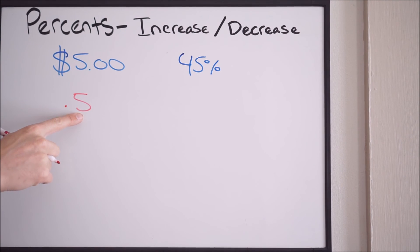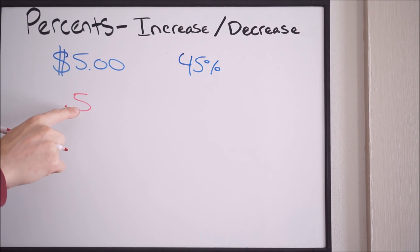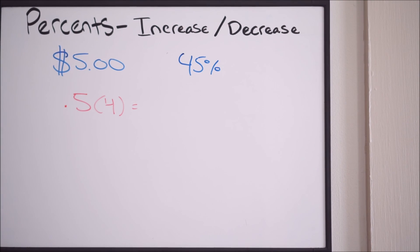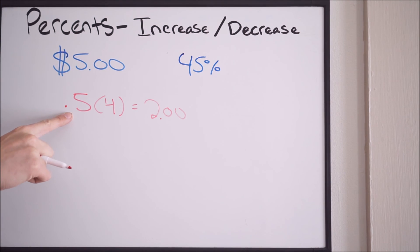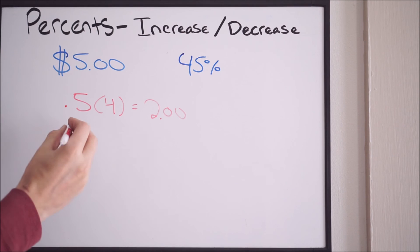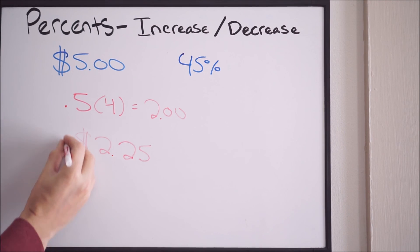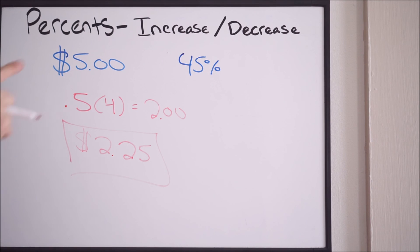Knowing that 10% of $5 is 0.5, what is 45% going to be? If you do 4 times 0.5, that puts you at 40% — because 10 plus 10 plus 10 plus 10 gives you 40. So multiplying by 4 gives you $2. Now we account for the final 5%: since 10% is 0.5, then 5% is half that, or 0.25. Adding that to our $2, the new value is $2.25 — that is 45% of $5.